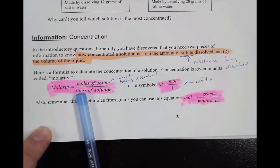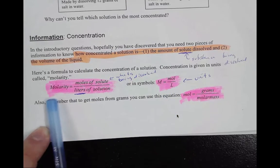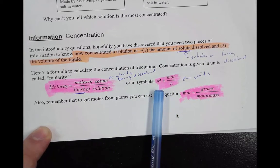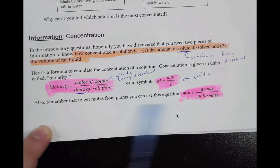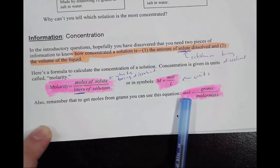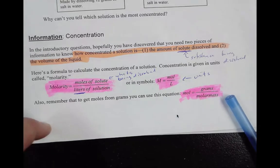You can look at this formula. This formula is the same one as right here, except we're using symbols instead. Molarity is symbolized big M, and then we divide moles divided by liters. Also remember guys, to calculate moles, it's the grams divided by the molar mass.